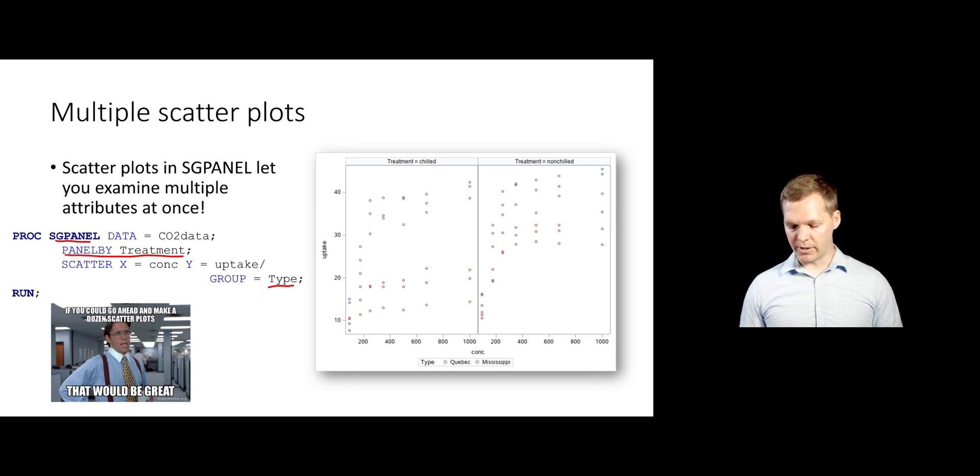And you can see the same relationship over here that Mississippi is lower, but they're both higher, generally speaking, for the non-chilled group. So again, we're making really useful insights into our data by creating these graphs.